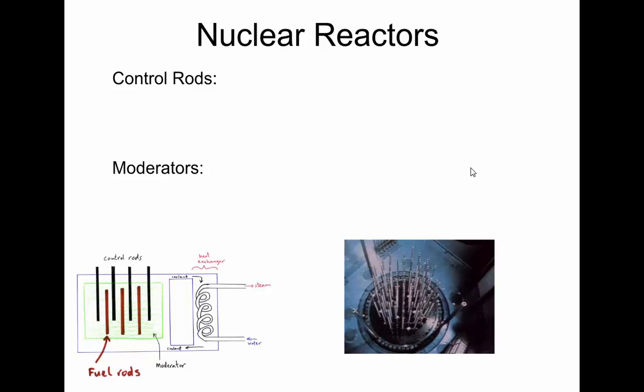Now, it has to be controlled, and it's controlled with two important parts of the nuclear reactor. The control rods, these are rods of usually cadmium or boron that can absorb neutrons. Because the chain reaction of these neutrons is what causes the reaction. By altering these control rods, we can control the rate of the reaction.